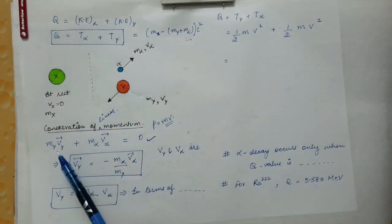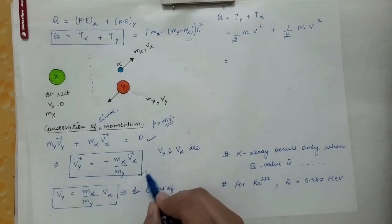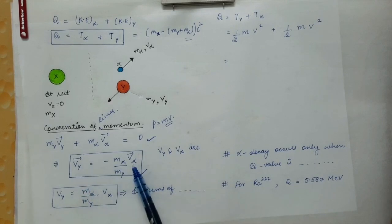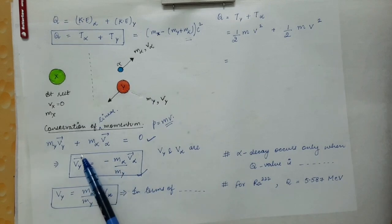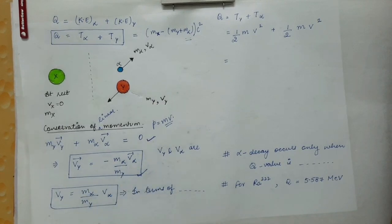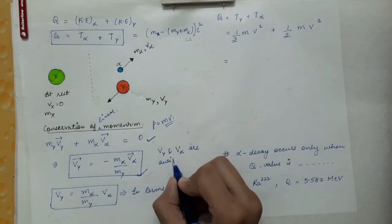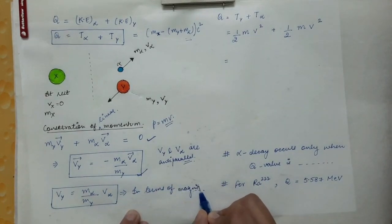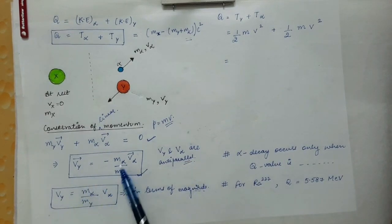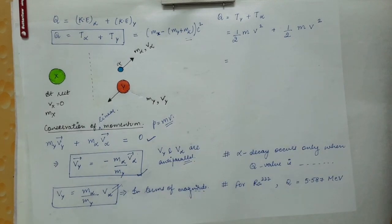From the momentum equation, the velocity of the daughter nucleus is V_Y = −(M_alpha / M_Y) × V_alpha. The negative sign means V_Y and V_alpha are anti-parallel — opposite in direction. In terms of magnitude: V_Y = (M_alpha / M_Y) × V_alpha.